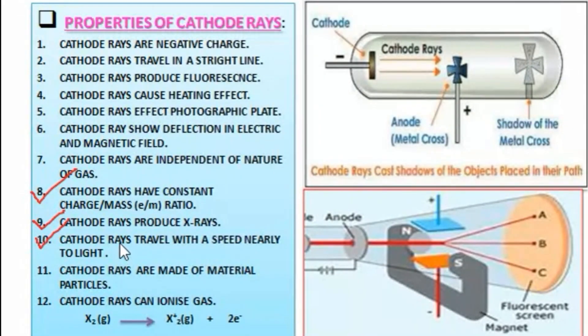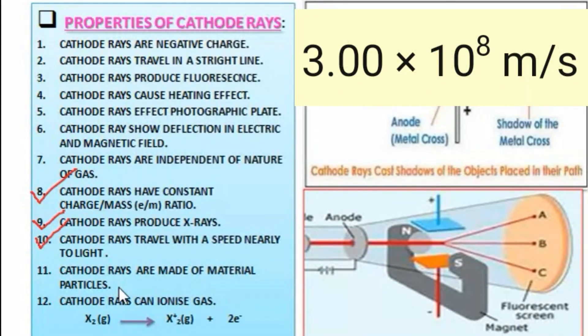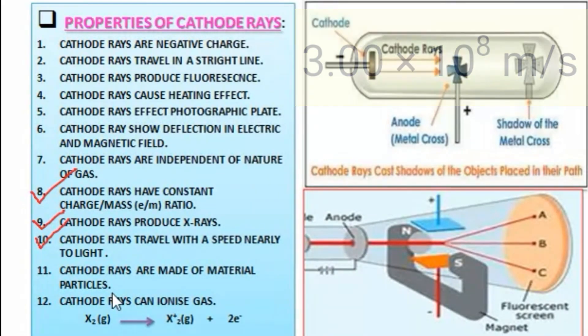Number 10: cathode rays travel with a speed nearly equal to light. The light speed is 3 × 10^8 meters per second. Similarly, cathode rays travel with a speed nearly equal to light.